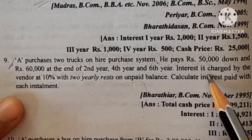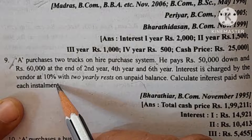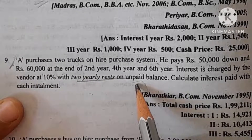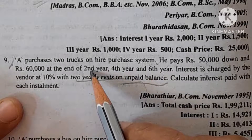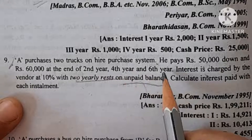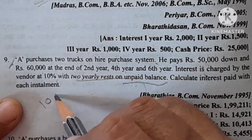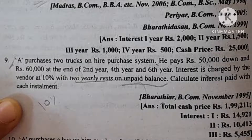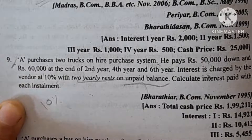The interest is charged by the vendor at a 10% rate of interest, with a 2-year rest on the unpaid balance. So payments are made every second year — at the second, fourth, and sixth year. The task is to calculate the interest paid with each installment.